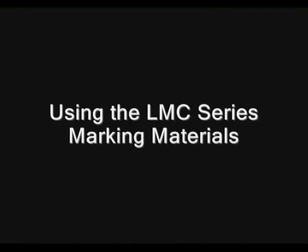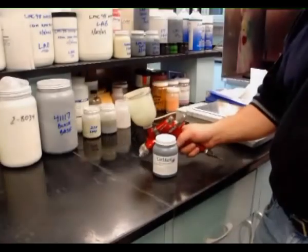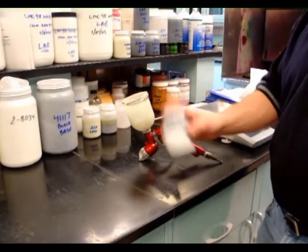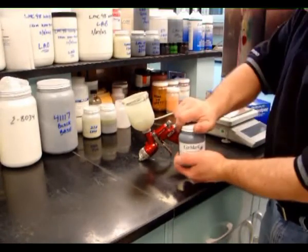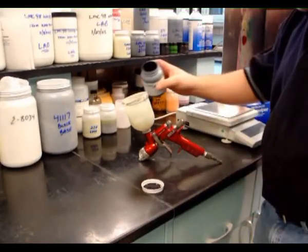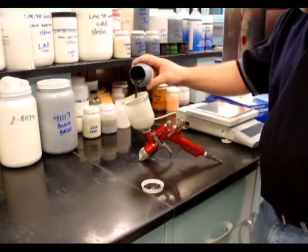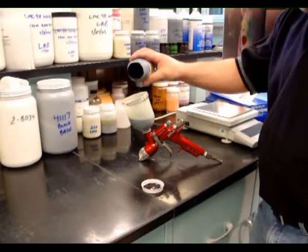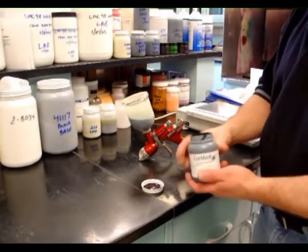Before using the LMC series products, please be sure to shake or stir the material thoroughly. The marking material must be applied using a spray gun or an airbrush. This will ensure good results. The LMC is ready to use directly from the jar. If necessary, a very small amount of water may be used for thinning.